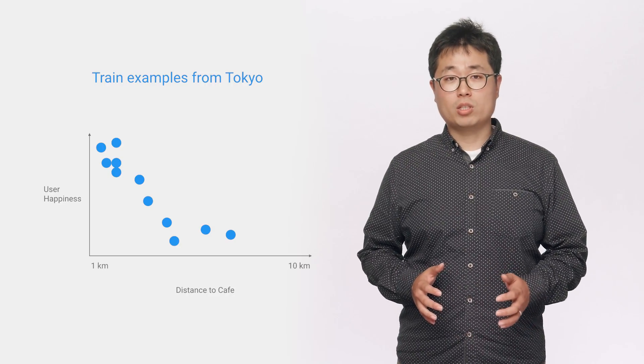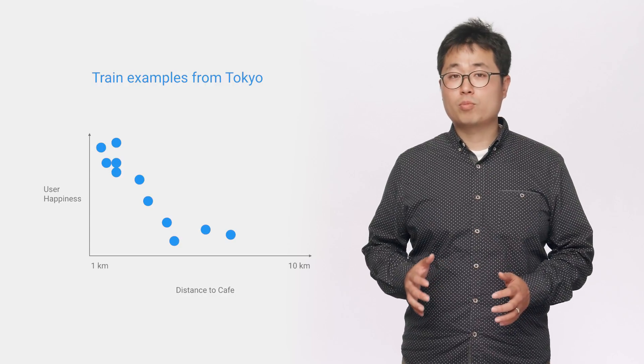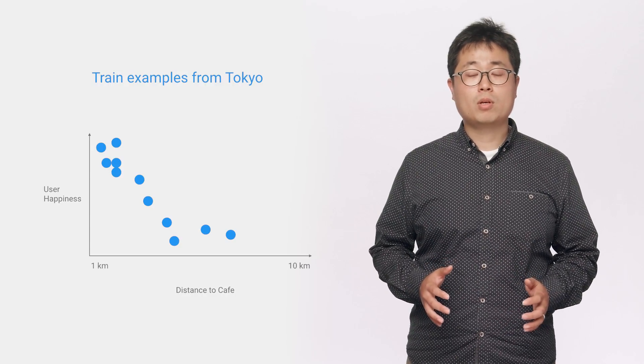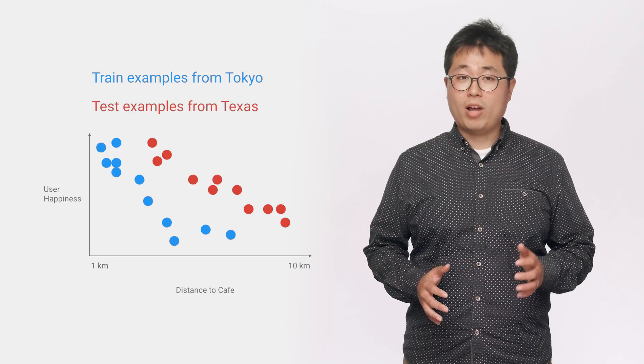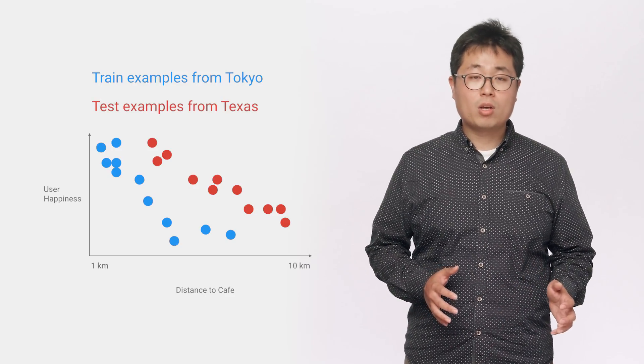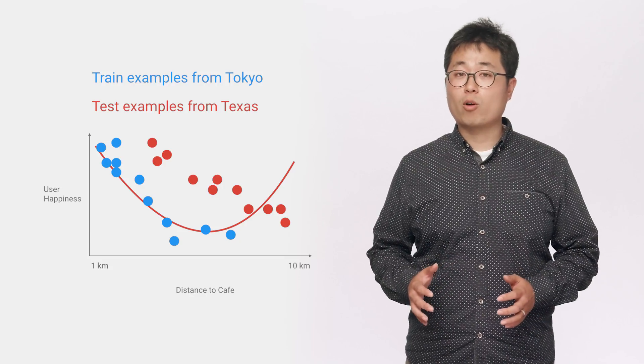And the data is noisy, so the model doesn't learn the global trend that users prefer nearer coffee shops. If we try to use the model in Texas, where you have to drive to get coffee, we may be surprised by the model's unexpected behavior for faraway coffee shops. With lattice models, you can easily train a model that captures your prior knowledge about which subset of inputs should be monotonically increasing or decreasing inputs.